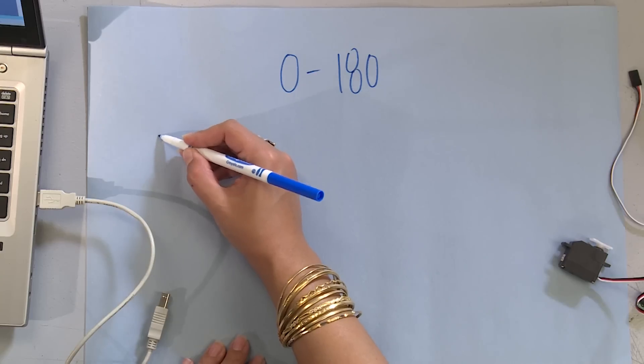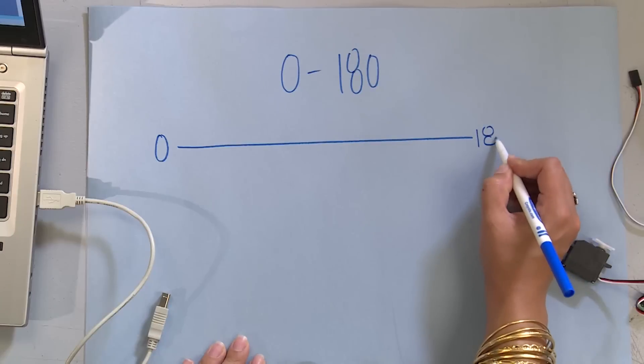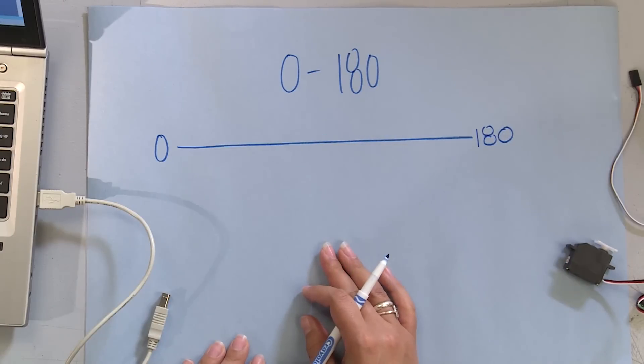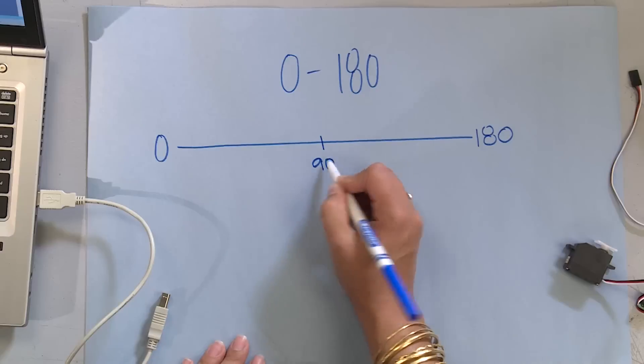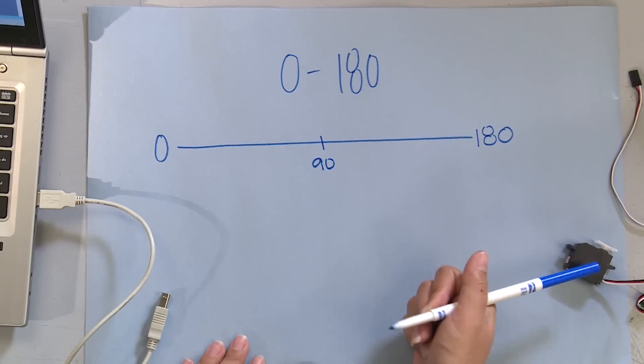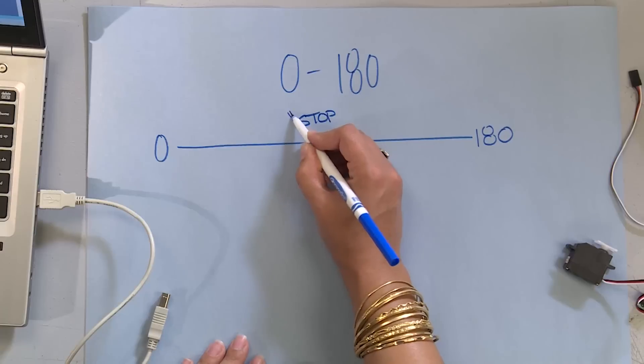We're going to say 0 is here, and then over here is going to be 180. 180 divided by 2 is 90, so that's about halfway. 90 for a continuous servo is stop. But I'm going to put that in quotation marks because it's not perfect.